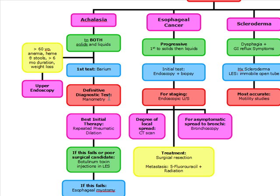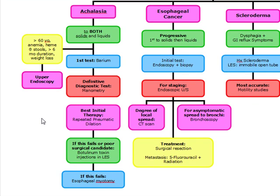Our best initial therapy is going to be repeated pneumatic dilation. If pneumatic dilation was tried and it failed, we're going to repeat pneumatic dilation — you're not going straight to the next step. If repeat pneumatic dilation fails, we're going to try an injection of botulinum toxin. Botulinum toxin is also used in patients that refuse surgery or refuse pneumatic dilation. And if botulinum toxin injection in the lower esophageal sphincter fails, we're going to do esophageal myotomy.